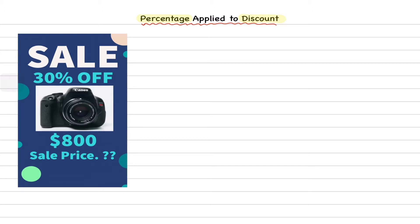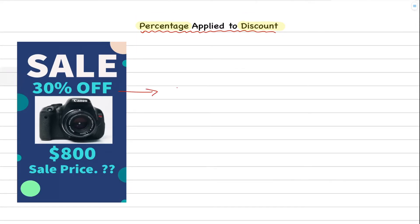We're going to understand percentage applied to discount with the help of an example. As you can see here we have a sale in which there is 30% off, so 30% is the percentage discount that we are getting. Whenever we're working with discounts there are a couple of things to watch out for.